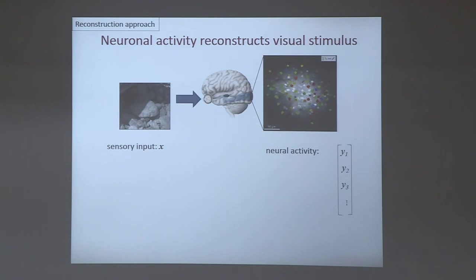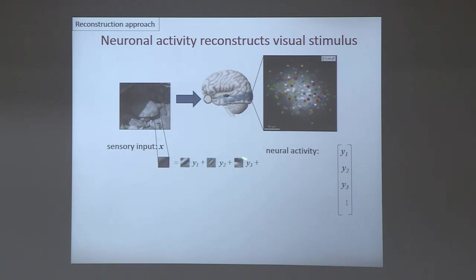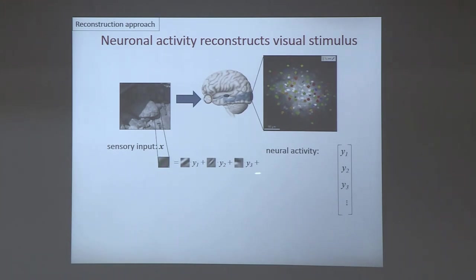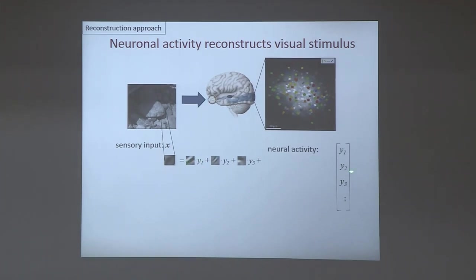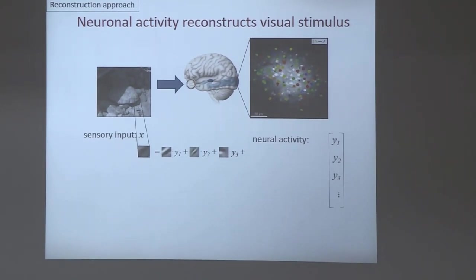In the visual cortex, for example, we know that neuronal feature vectors — the stimuli that stimulate each neuron most strongly — are edges of different orientation and spatial frequency. You can think of neuronal population activity in V1 as reconstructing the stimulus as a linear combination of those feature vectors, weighted by the firing rates of individual neurons. This is like Fourier decomposition, except the basis is not Fourier but Gabor patches, forming an over-complete basis.